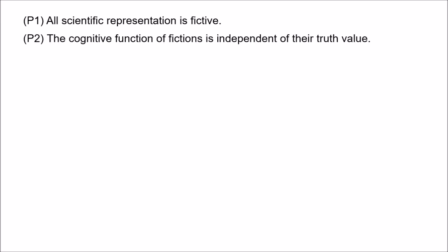Premise two: the cognitive function of fictions is independent of their truth value. The point here is simply that when creating a fiction, the author is not constrained by truth. Of course a fiction can be true — historical fictions will often make claims about the world that are true — but it need not be. Anything can in principle be false, so fiction is not constrained by truth.